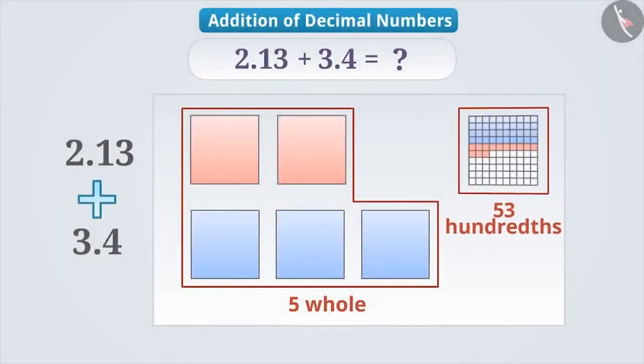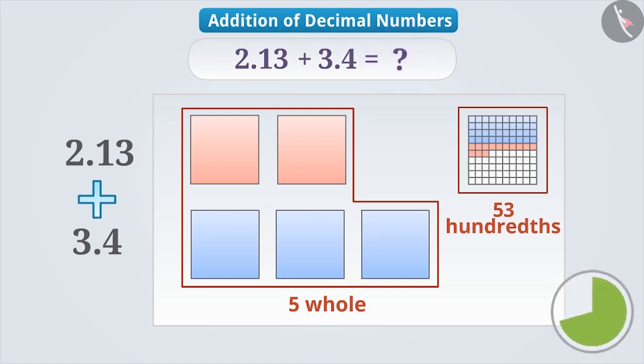Now tell me how do you write five wholes and 53 hundredths in decimal form? Think for a while. Absolutely correct.